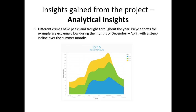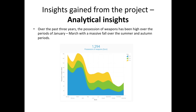I found it really interesting that certain crimes peak and trough throughout the year. For example, bicycle theft — you can probably guess for yourself — is due to the fact that not many people ride their bikes when it's very cold, whereas in the summer they're cycling around and leaving their bikes out more. In contrast, possession of weapons has no such correlation — it is clearly very high in the winter and then drops in the summer.